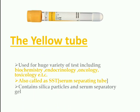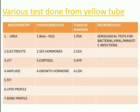The yellow tube is the most common tube seen in the lab. It is used for a variety of tests including biochemistry, endocrinology, oncology, and toxicology. It is also called an SST — serum separating tube — and contains silica particles or serum separating gel at the bottom of the tube.